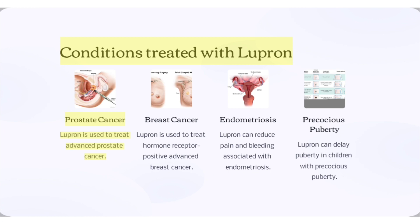Conditions treated with Lupron include prostate cancer — Lupron is used to treat advanced prostate cancer — and breast cancer, where Lupron is used to treat hormone receptor-positive advanced breast cancer.